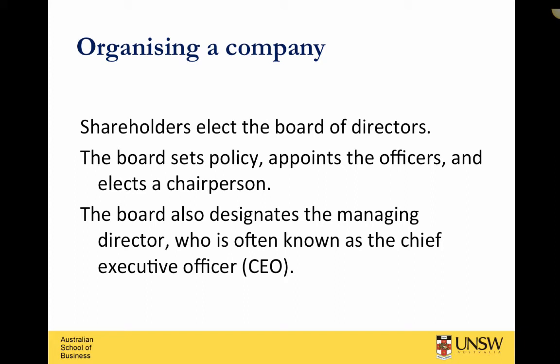Shareholders elect the board of directors, and the board sets all of the policies of the company. This could include dividend policy — for example, does the dividend have to go to shareholder approval, or can the board of directors approve a dividend straight away? The board appoints officers such as the company secretary and a chairperson, and also appoints someone as the chief executive officer, otherwise known as CEO. In some companies, the chairperson is the same person as the CEO, often the case when it's the founder of the company — referred to as duality.